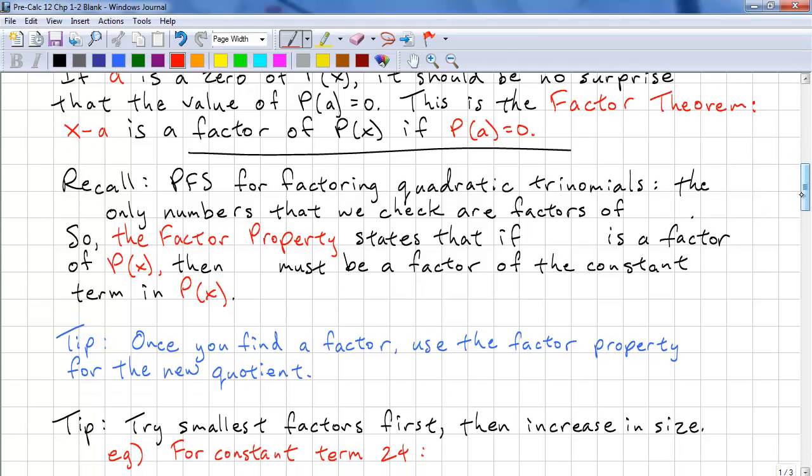Recall that product factor sum is for factoring quadratic trinomials. The only numbers that we check are the factors of a times c. And the factor property states that if x minus k is a factor of P(x), then k must be a factor of the constant term.